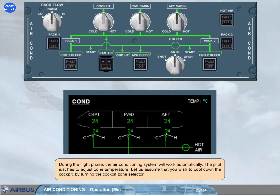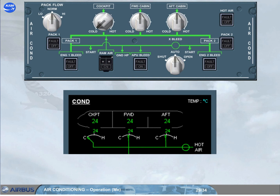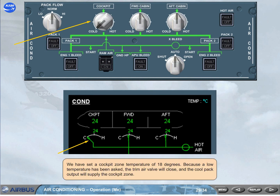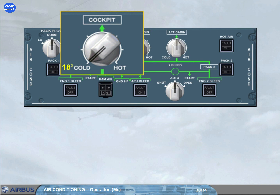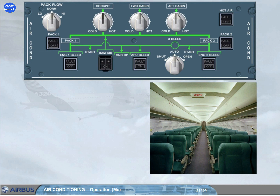During the flight phase, the air conditioning system will work automatically. The pilot just has to adjust zone temperature. Let us assume that you wish to cool down the cockpit by turning the cockpit zone selector. We have set a cockpit zone temperature of 18 degrees. Because a low temperature has been asked, the trim air valve will close and the cool pack output will supply the cockpit zone. Note that each increment on the zone temperature selector scale is 2 degrees, giving a selectable range from 18 degrees at cold to 30 degrees at hot. In case of low passenger numbers, the pack flow selector can be set to low — this will reduce engine bleed air consumption and therefore save fuel.